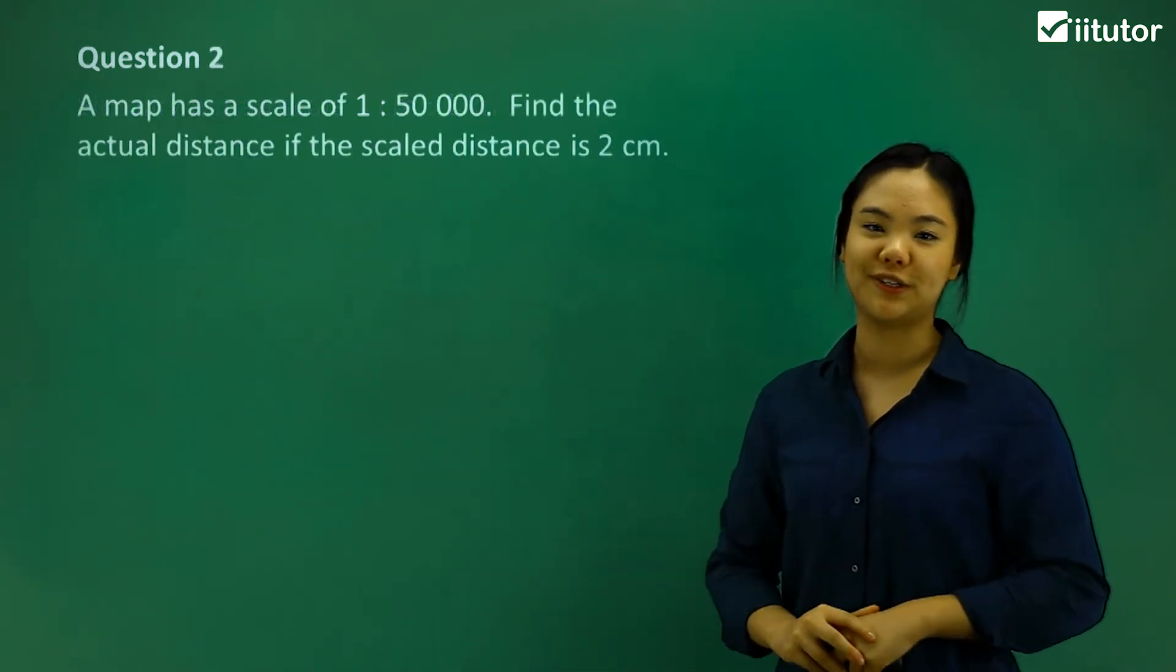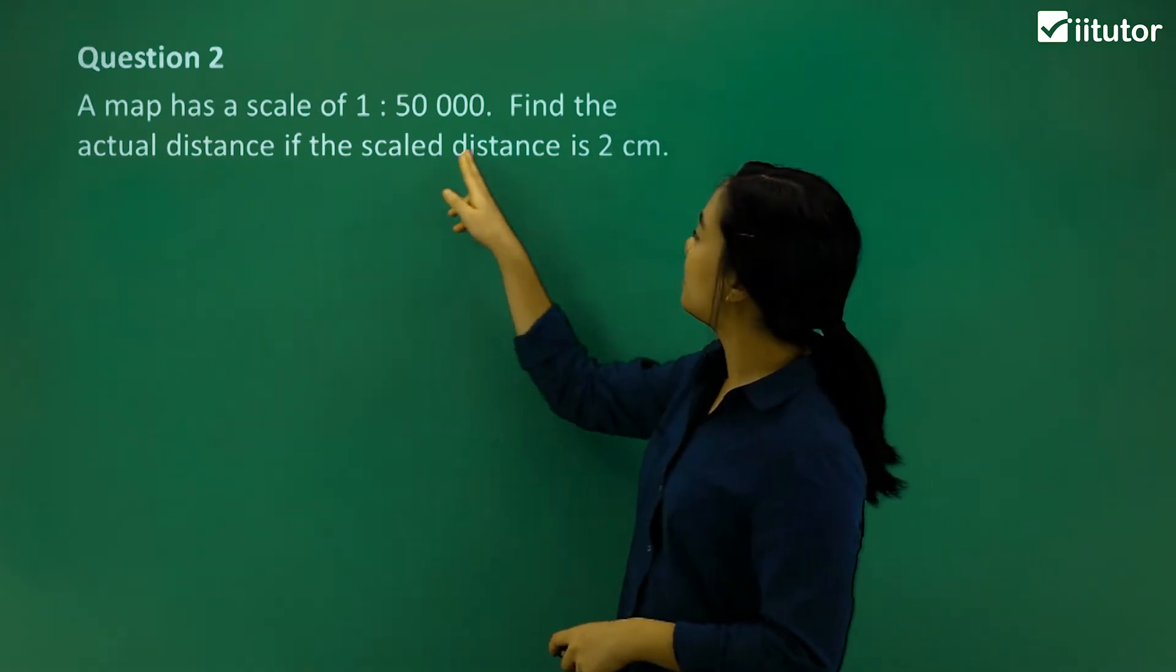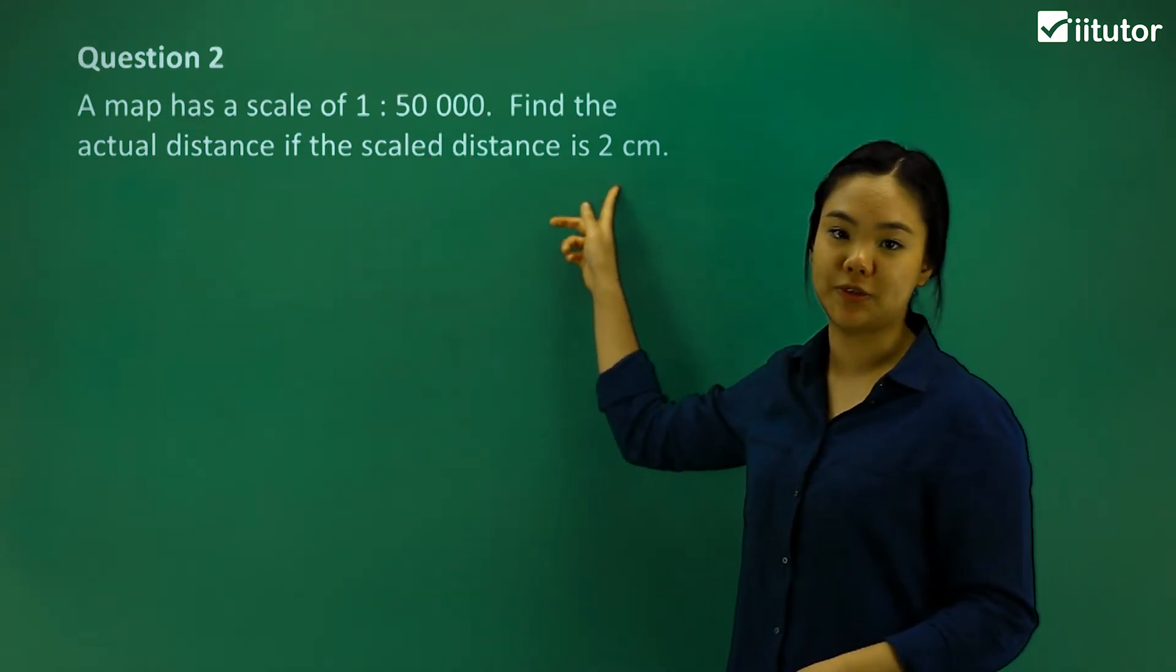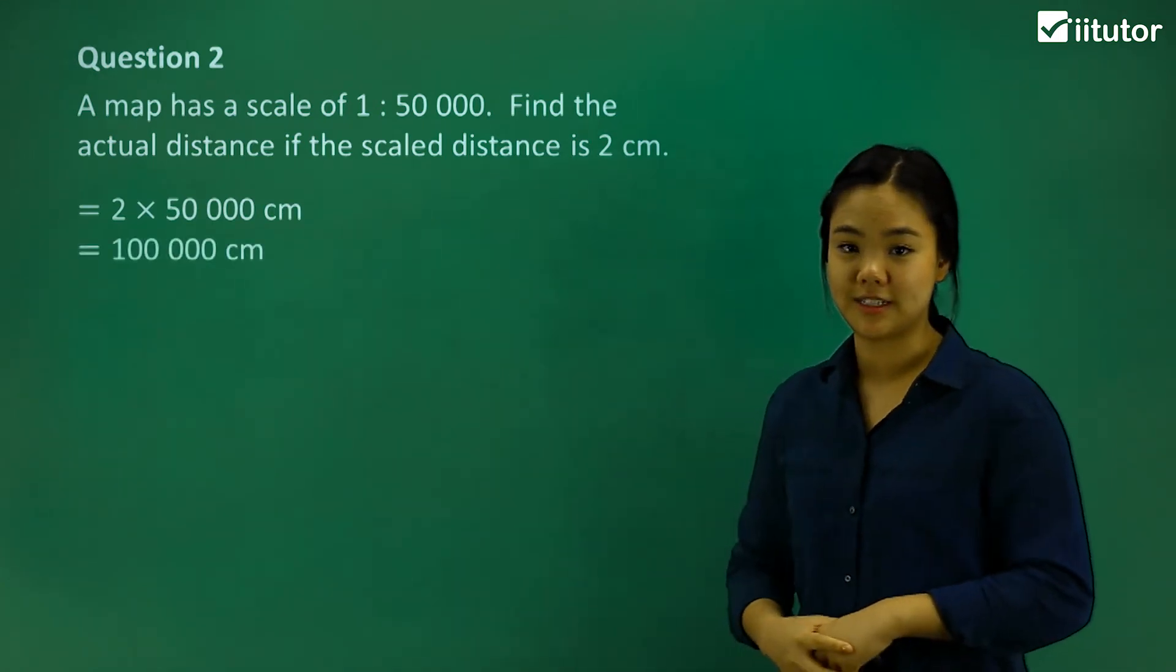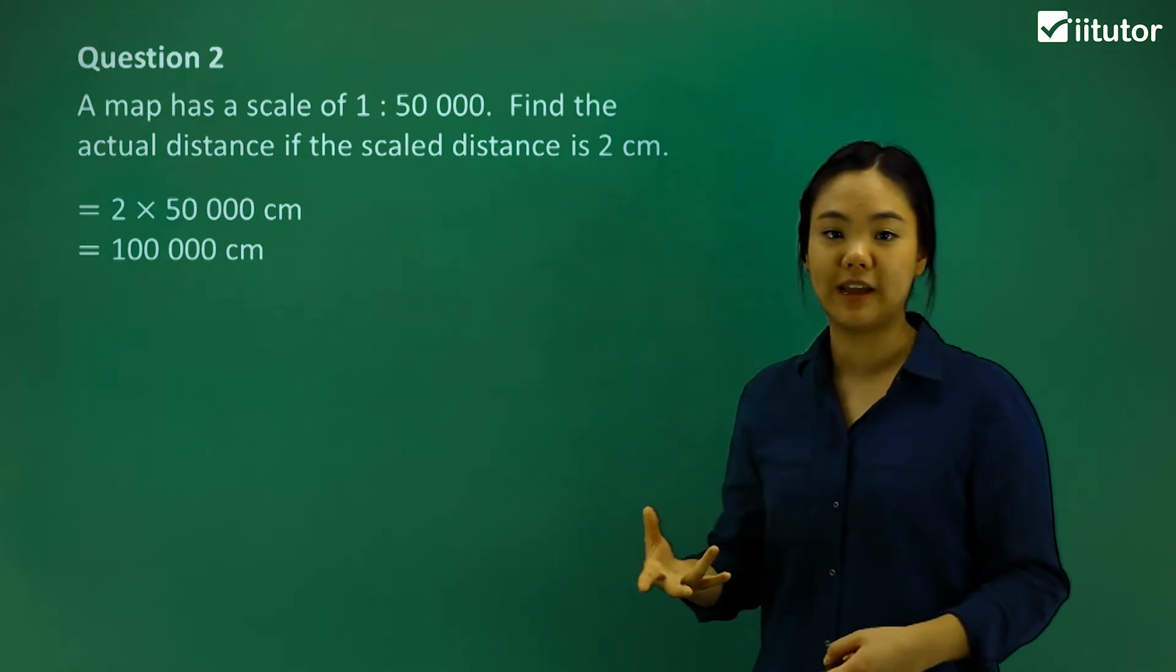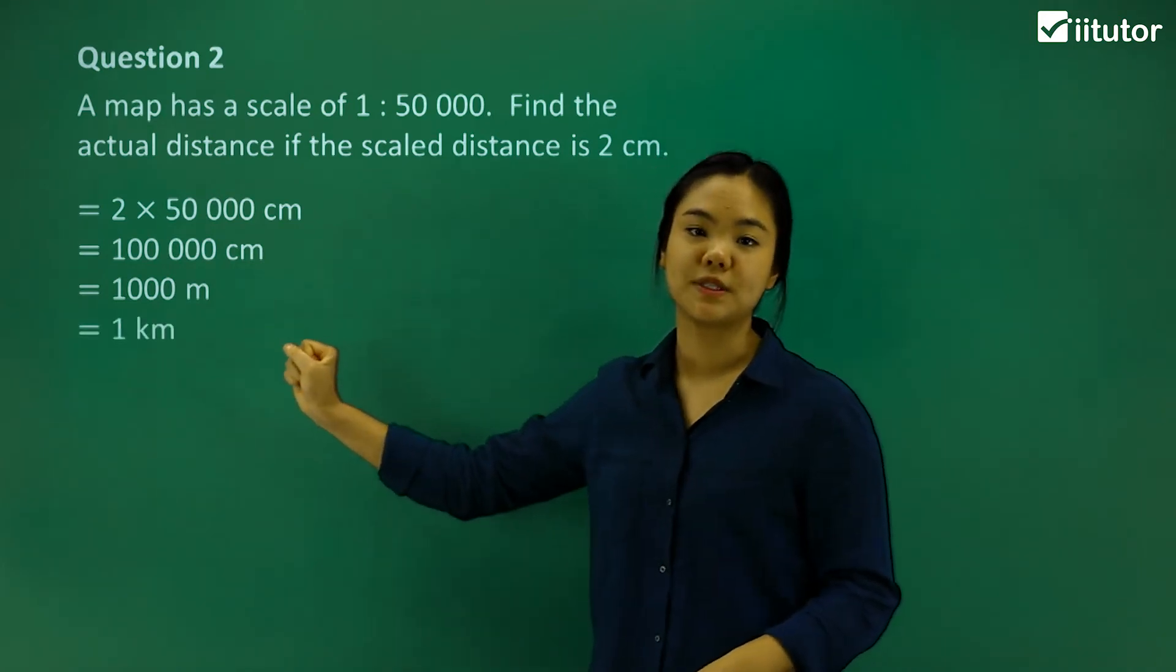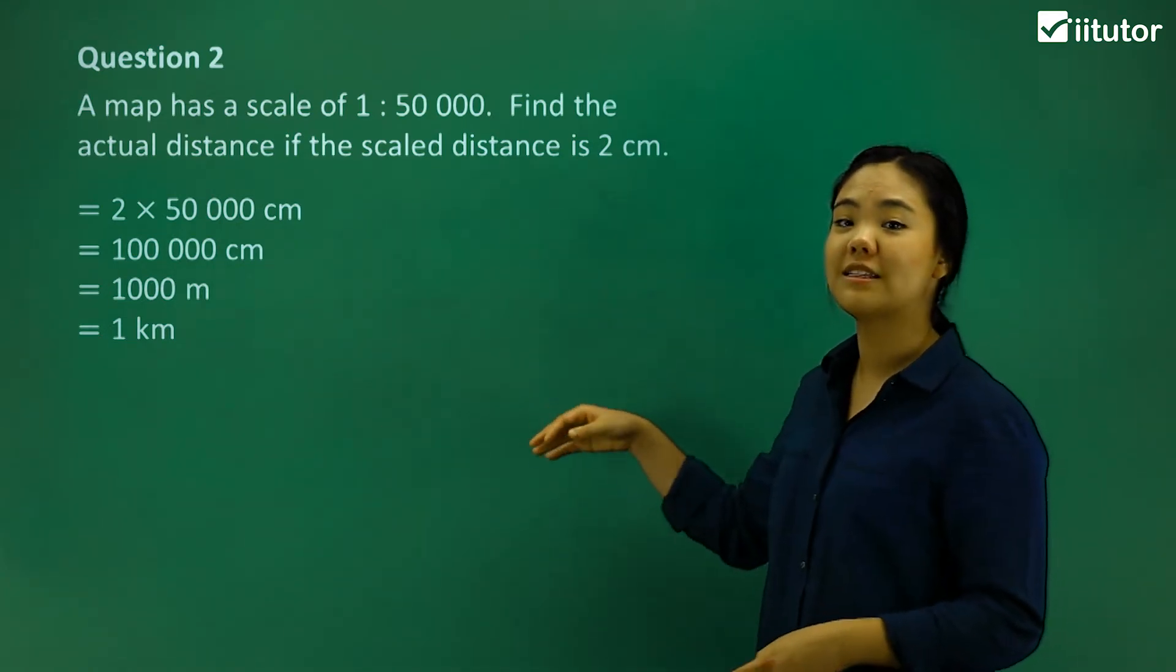Let's move on to question two. A map has a scale of 1 to 50,000. Find the actual distance if the scale distance is 2 centimeters. If 1 is to 50,000, then we have to times it by 2. So 2 times 50,000 centimeters equals 100,000 centimeters. Now we want to get it to the smallest possible number, so we change the units to meters. It becomes 1,000 meters, which equals 1 kilometer. So the actual distance is 1 kilometer.